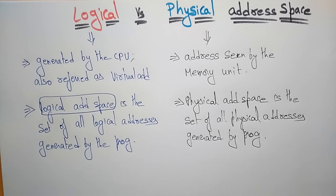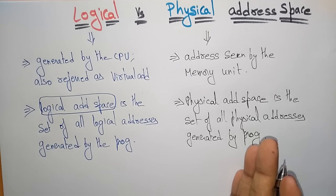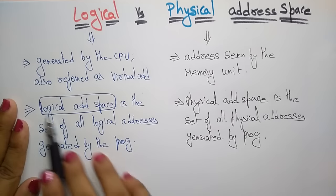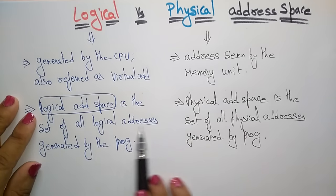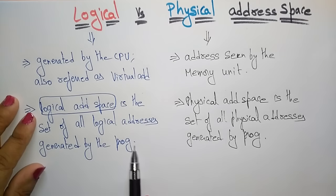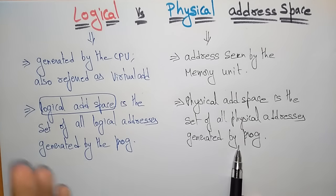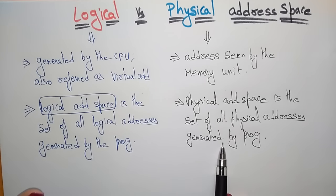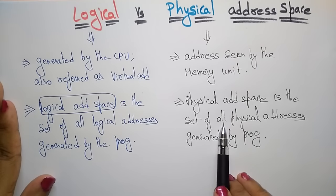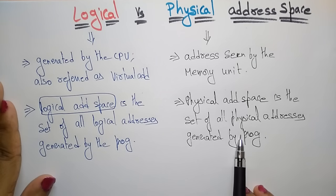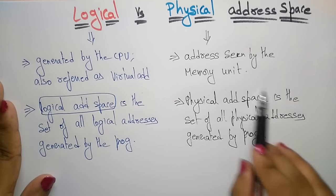When we run a program, whatever the user has written, the CPU executes that program. The CPU consists of some logical address space, which is a set of all logical addresses generated by the program. That program, when it converts from logical to physical address — with the help of the memory management unit — is stored in the memory unit. So the physical address space is a set of all physical addresses generated by the program, and those physical addresses are stored in the physical address space.